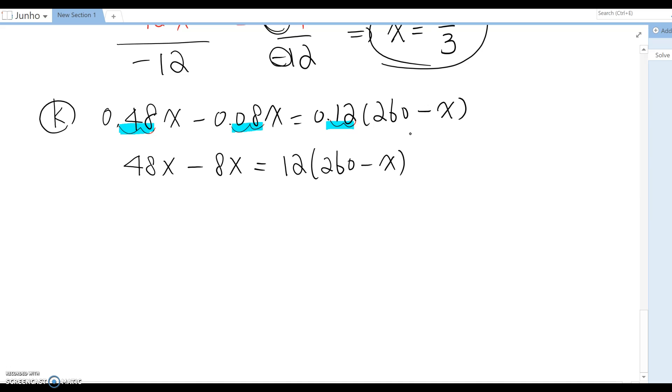Now combine like terms here. This becomes 40x, and then the right side becomes 3,120 minus 12x.